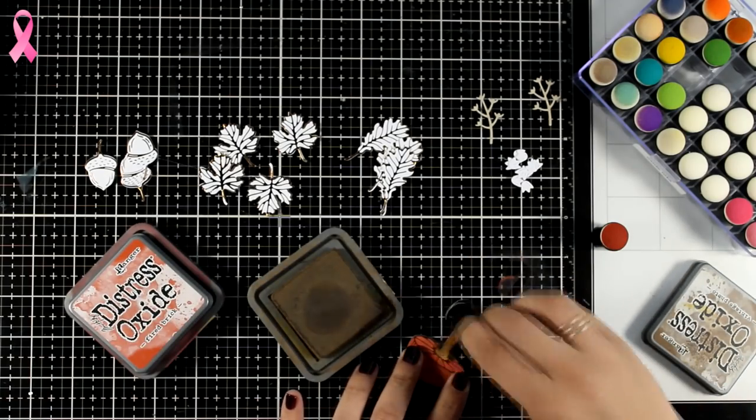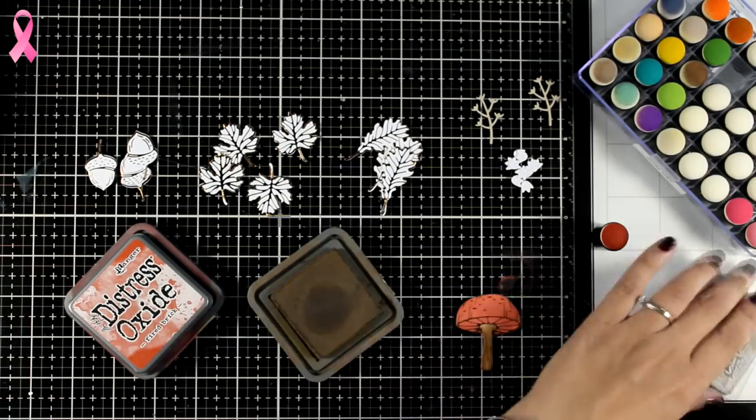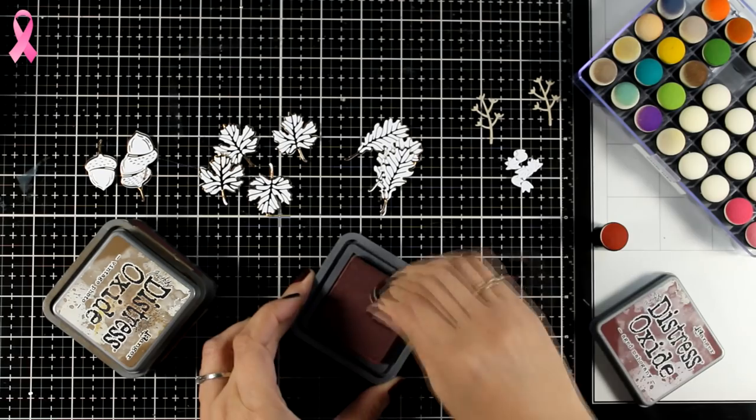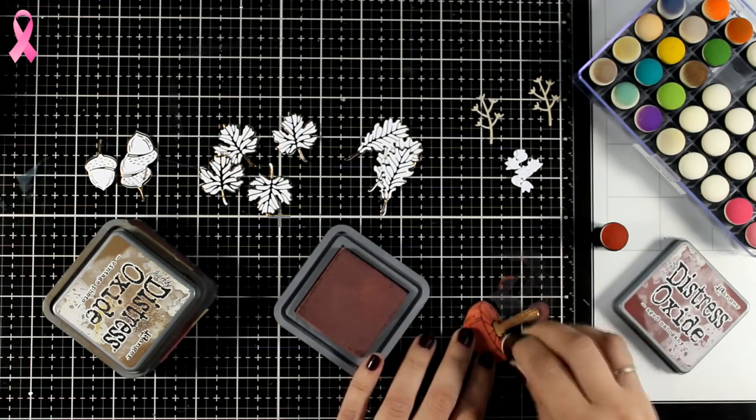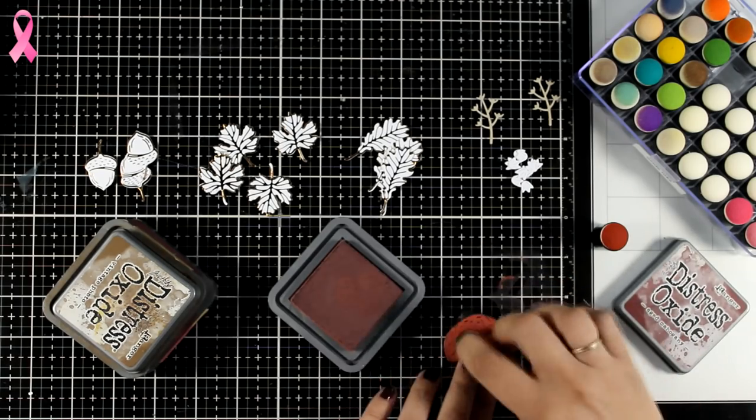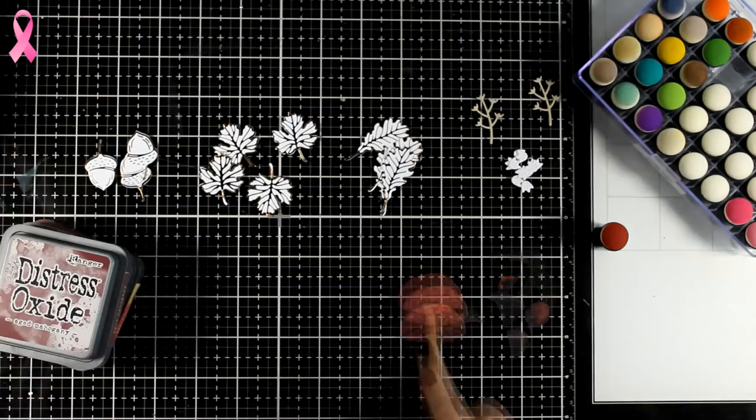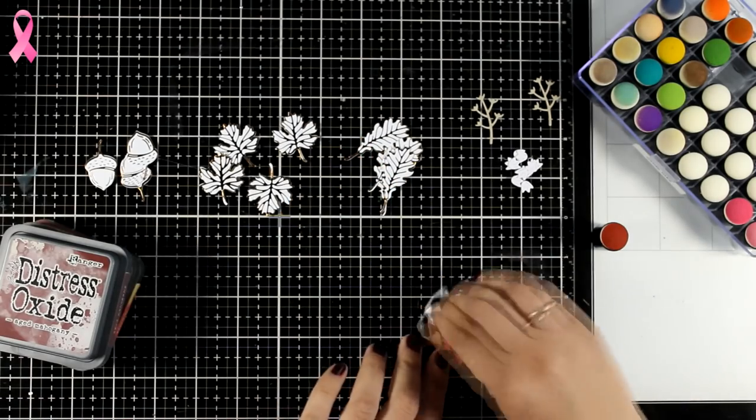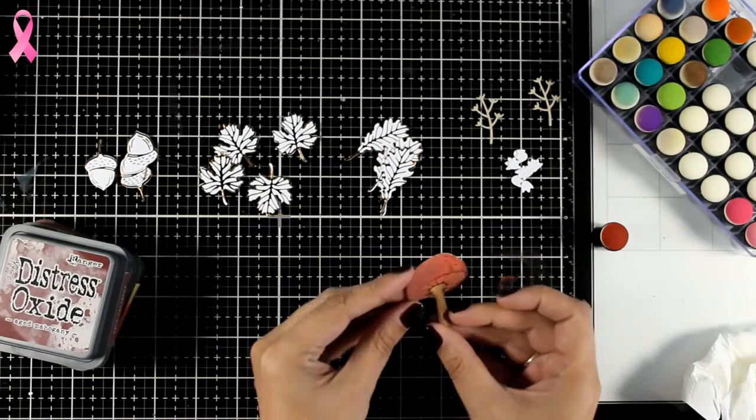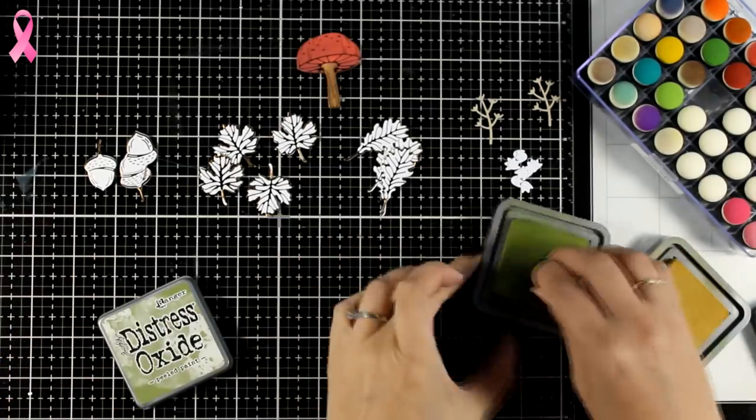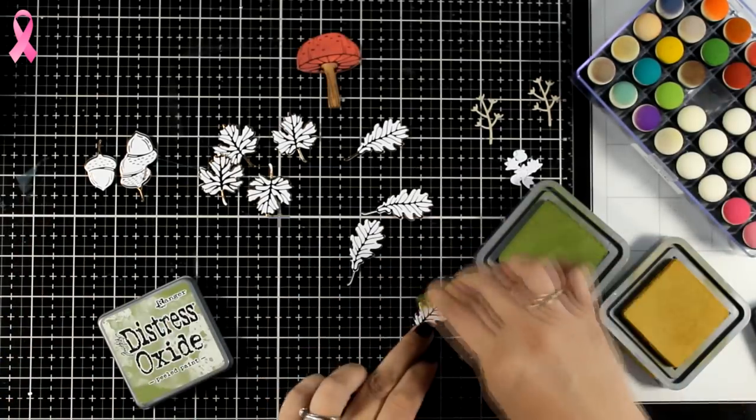You can also go with your Copic markers, your alcohol markers if you like. Keep in mind that when you go over the foil lines they are going to resist alcohol markers, which is great, as well as any distress ink. For coloring everything I'm going with my favorite color combos for fall. I'm mainly working with Aged Mahogany and Fired Brick for the reds.